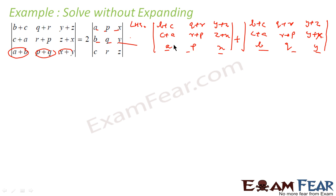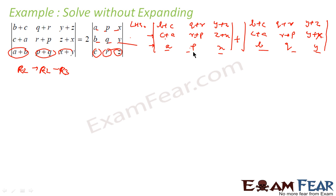If you compare the rows - c plus a minus a gives you c, r plus p minus r gives you r, z plus x minus x gives you z. So you get c, r, and z - which is what we are looking for. So if we apply R2 = R2 minus R3 in this case, we get a similar row. For the second determinant, we can subtract b from the first row, so R1 = R1 minus R3, and we get c, r, z - the one we are looking for.